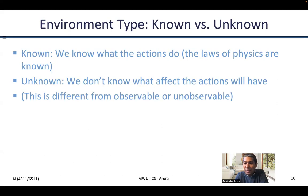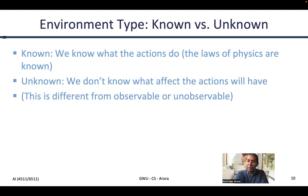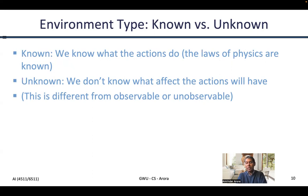Last but not least, the environment type is called known versus unknown. Let's not confuse it with observable or unobservable. The environment may be observable and may still be unknown. What is meant by an unknown environment is when we do not quite know what the actuators actually do — in other words, the rules of physics in this environment are not well known. Normally one would think pressing the brake pedal slows the car down, but perhaps we do not know which pedal is the gas and which is the brake. In that sense this environment is unknown.